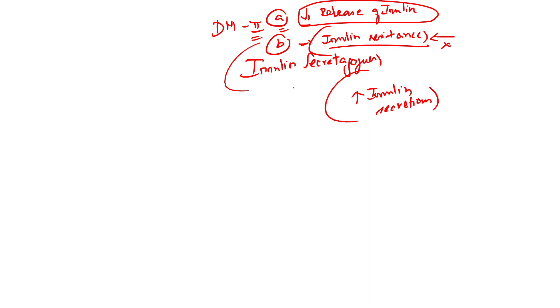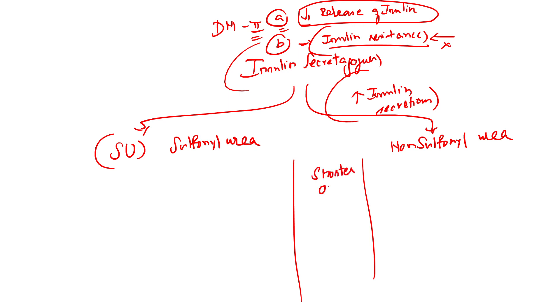Now these insulin secretagogues can pull the insulin out of the pancreas and they are also divided into sulfonylurea group of drugs and you also have something called non-sulfonylurea group of drugs. What is the common thing between both the kind of drugs? These drugs have shorter onset of action. It means they can have a rapid onset, but they themselves do not decrease the glucose. They will make sure the insulin comes out. Insulin will take care of the glucose.